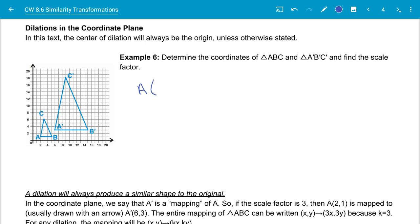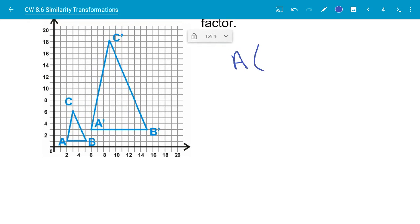Here's A. The point A is 2 and 1, and I'm just going to do A prime right here beside it, and that point is 6 and 3. And then B, the point is 5 and 1. And B prime, that point is 15 and 3.